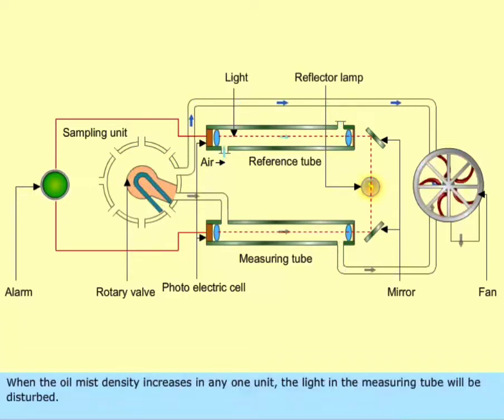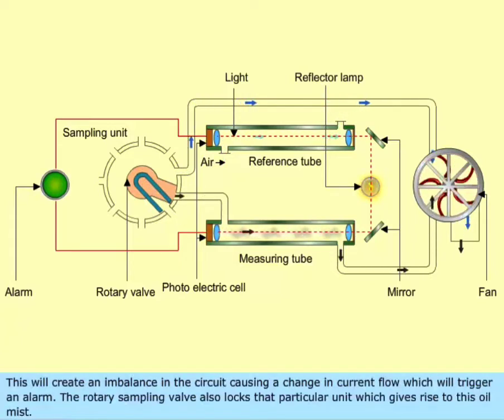When the oil mist density increases in any one unit, the light in the measuring tube will be disturbed. This will create an imbalance in the circuit, causing a change in current flow, which will trigger an alarm. The rotary sampling valve also locks that particular unit which gives rise to this oil mist.